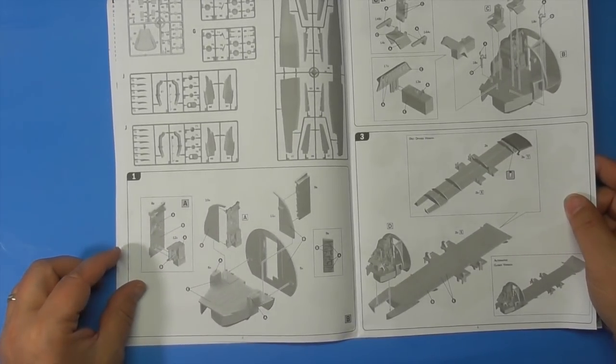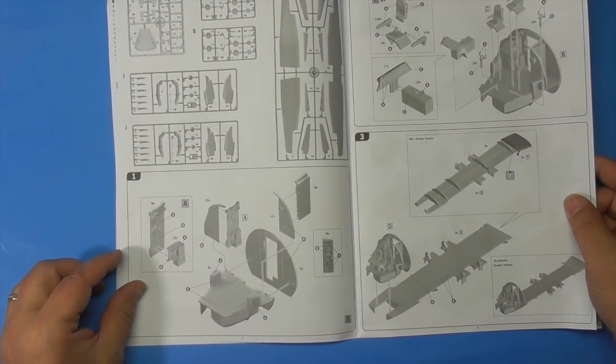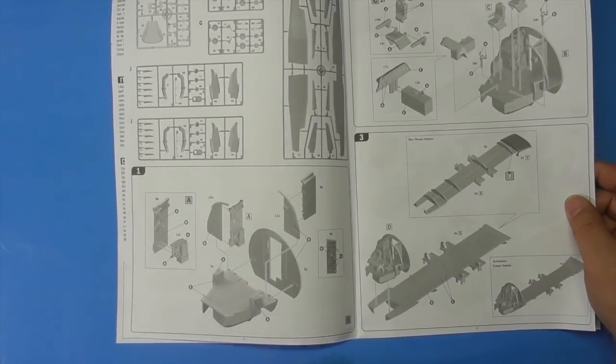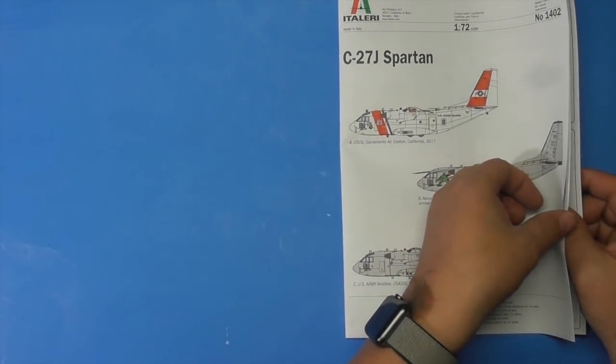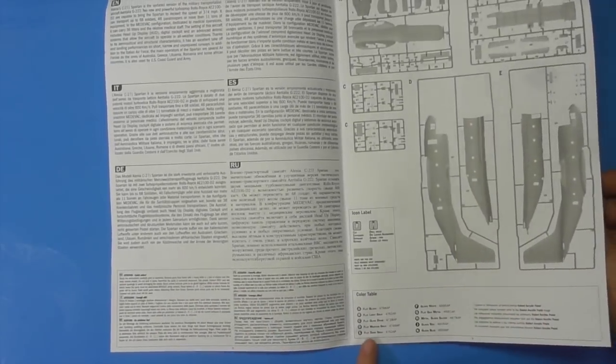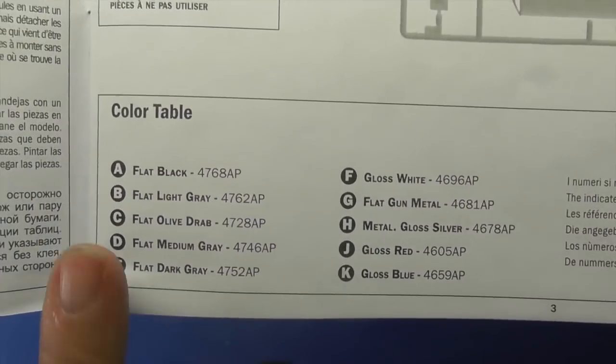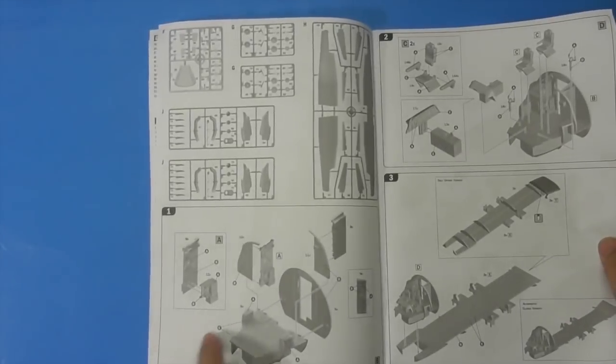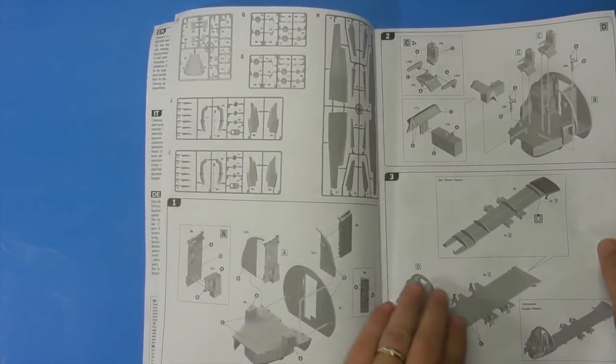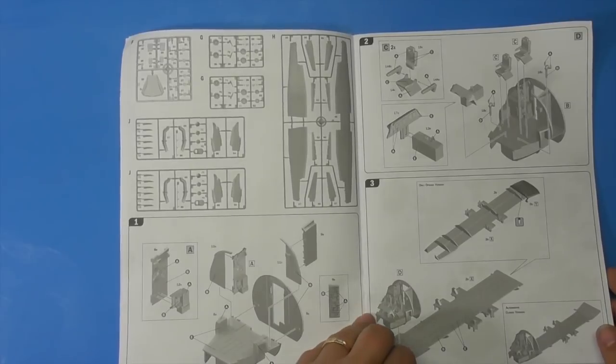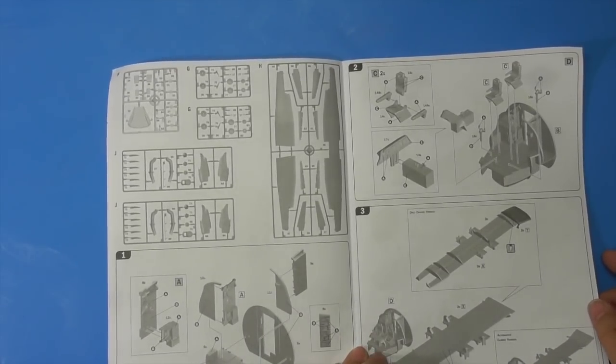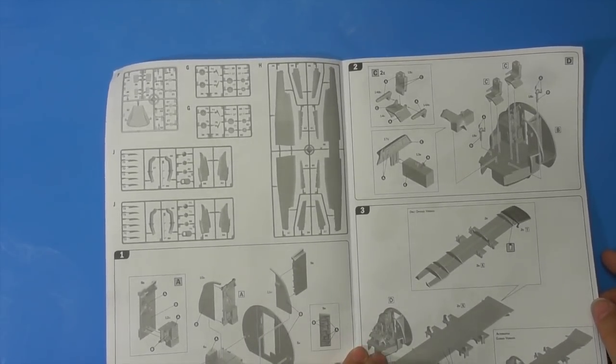Starting with the cockpit and the bulkheads. There's your color callouts with matching numbers which it does give you as your painting guide. I'd look at pictures for sure, but you're doing your cockpit then attaching the floor.